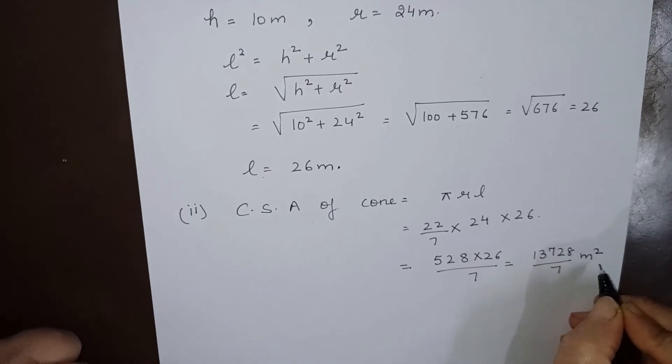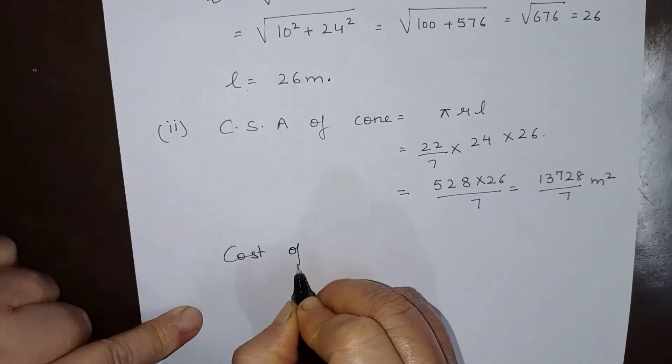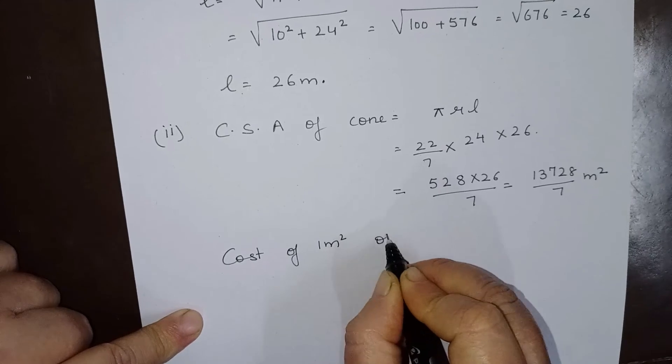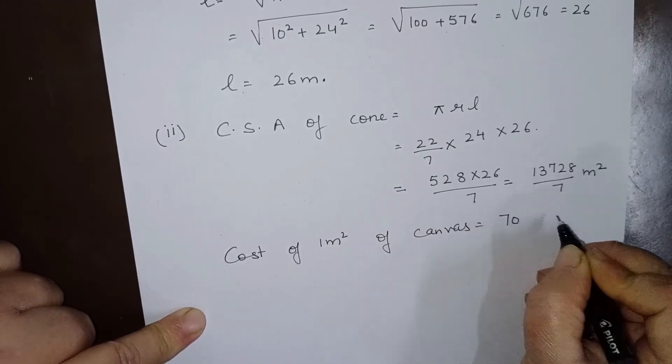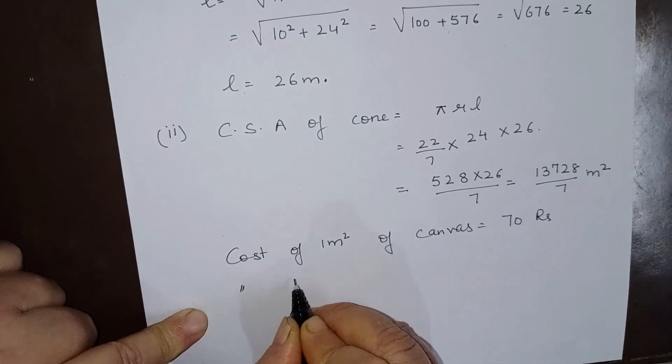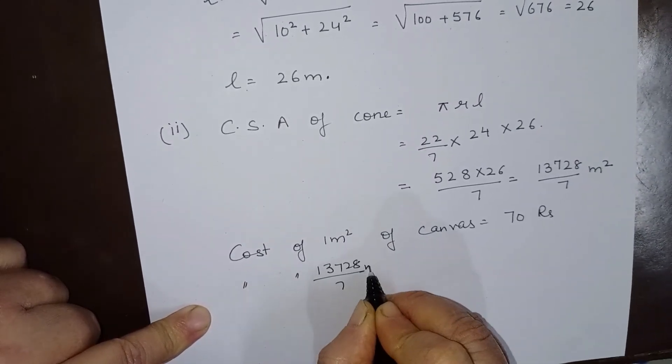So this is the curved surface area of the cone. Now the cost is: cost of 1 meter square of canvas is given to be 70 rupees, so cost of 13728 over 7 meter square